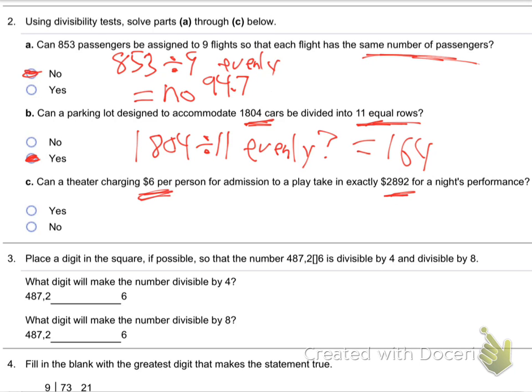Can a theater charging $6 per person for admission to a play take in exactly $2892? If it's $6 per person, can you take in exactly $2892? Is that possible? If it divides, it's the same question. Does that divide by 6 evenly? Does 6 go in there evenly? Is there an even amount? And what does it? $482. So yes. Exactly 482 people at $6 each gave the $2892.